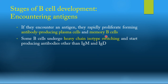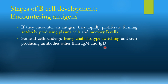Some of these B cells will also undergo something called heavy chain isotype switching — changing the heavy chain. This means the cell goes from producing IgM or IgD to producing IgG, IgA, or IgE. Depending on which constant gene is used: mu produces IgM, delta produces IgD, epsilon produces IgE, alpha produces IgA, and gamma produces IgG. This isotype switching is how B cells are capable of producing antibodies other than IgM and IgD.